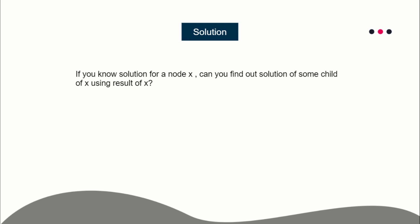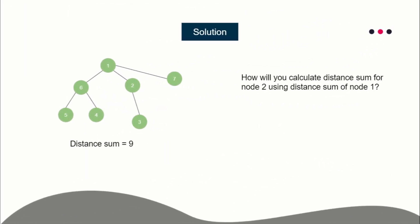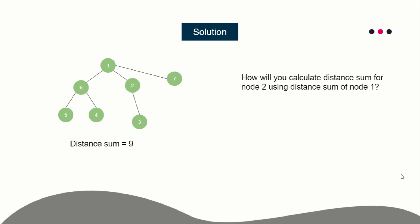Suppose this is the example tree. For node 1, the distance sum is 9, because nodes five, four, and three are at distance two — so 2+2+2=6 — and the remaining nodes are at distance one — so 3 — giving an overall sum of 9. If you know the distance sum of node 1, can you calculate the distance sum for node 2? If we can do that, then rerooting DP is applicable.